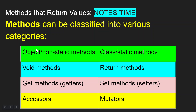We've already learned that there are two main categories of methods: methods can be non-static or static. Non-static methods can be called object methods because you have to create an instance of the class — you have to create an object — before you can call those methods. There are also class methods, or static methods, which contain the word 'static' in their method signature. When you call them, you don't have to create an object first; you can just refer to the class name, then the dot operator, then the method name.